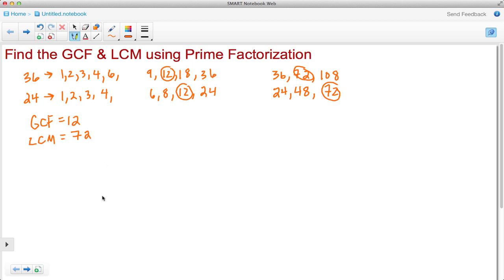And this here is what I would call or what I would consider the long way. A faster method would be to use something called prime factorization, and that's where we list a number as the product of its prime factors. Let's take a look at an example.